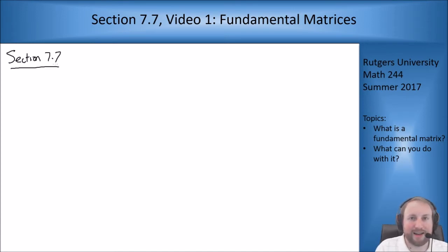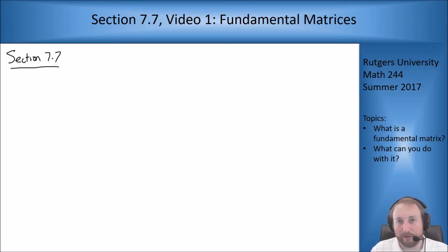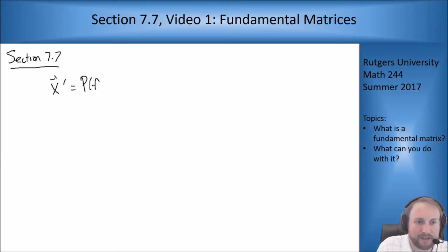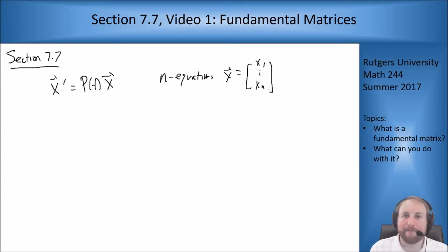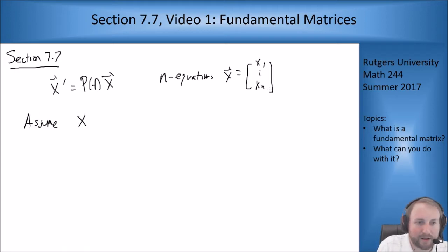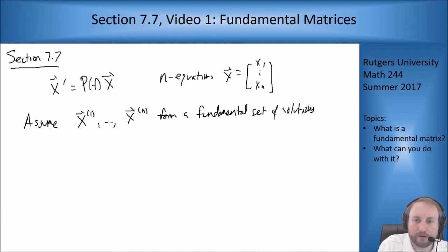In section 7.7 we're going to look at general n-by-n systems — n-by-n function systems — just because we might as well talk at this level of generality. So we're looking to solve something like x' = P(t)·x, where P can be non-constant and we have n equations. So x is the vector (x₁, x₂, ..., xₙ). Now we're going to take a fundamental set of solutions for this operator. Assume x₁ through xₙ form a fundamental set of solutions for this equation.